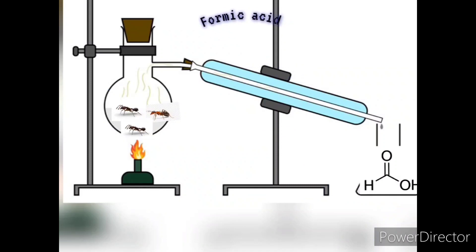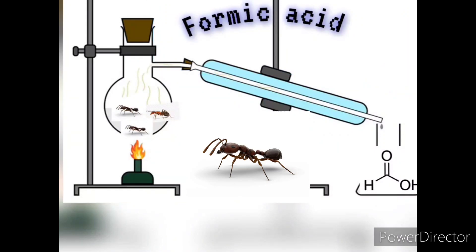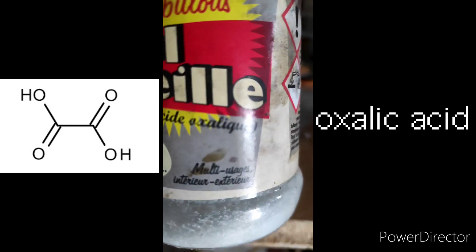But the point of this video is not to sacrifice hundreds of ants or deal with carbon monoxide. We will do the easiest way which is to distill a mix of oxalic acid and glycerol. Both are very easy to obtain in a shop or you can even make the glycerol yourself with cooking oil.